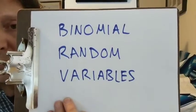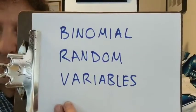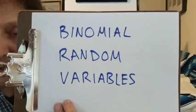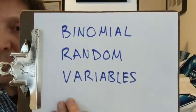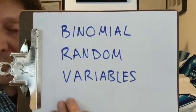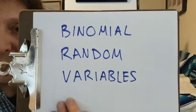Recall that a Bernoulli random variable is an experiment that has a success and a failure, and we look at the probability of success. A binomial random variable is when we do n independent Bernoulli trials and ask about the number of successes. It's like flipping a coin and asking how many times did we get heads. We've done this already, but let's do it again using random variables and computing expected value and variance.